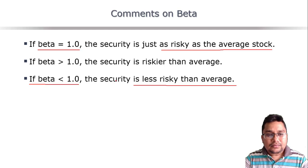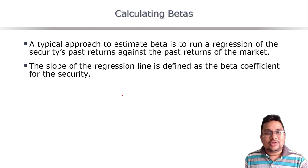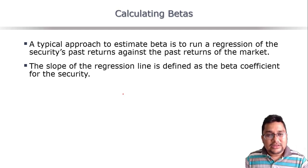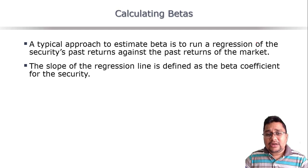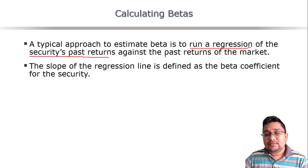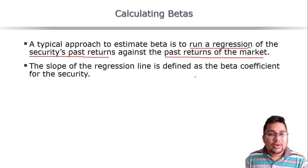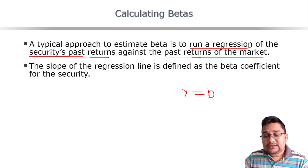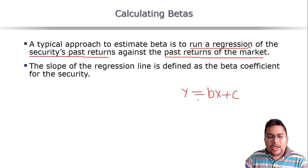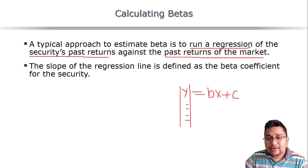Now let us talk about the calculation of beta. One approach is to run a regression of the security's past returns against the past returns of the market. The familiar straight-line equation is y = bx + c. You get different past values of y (the security's return) and different values of x (the market's return), and use software or Excel to run the regression.